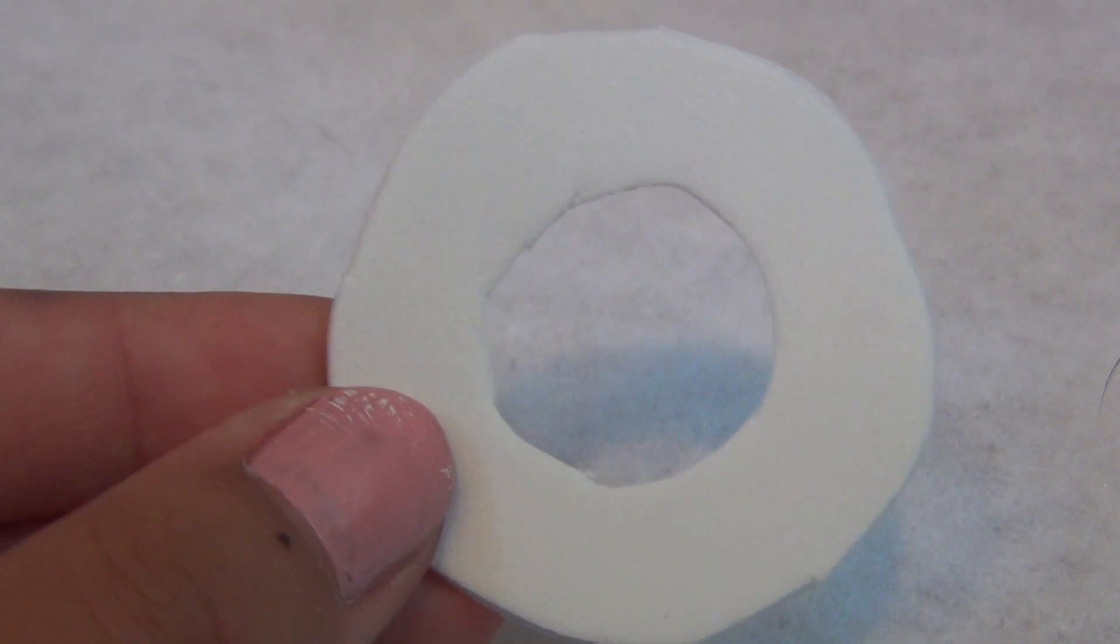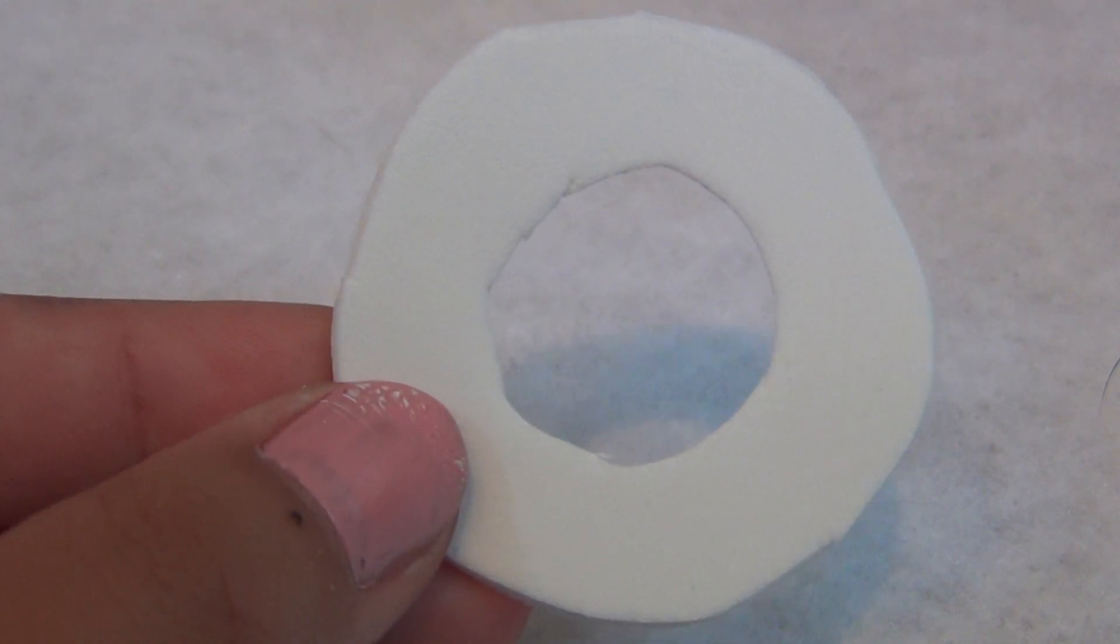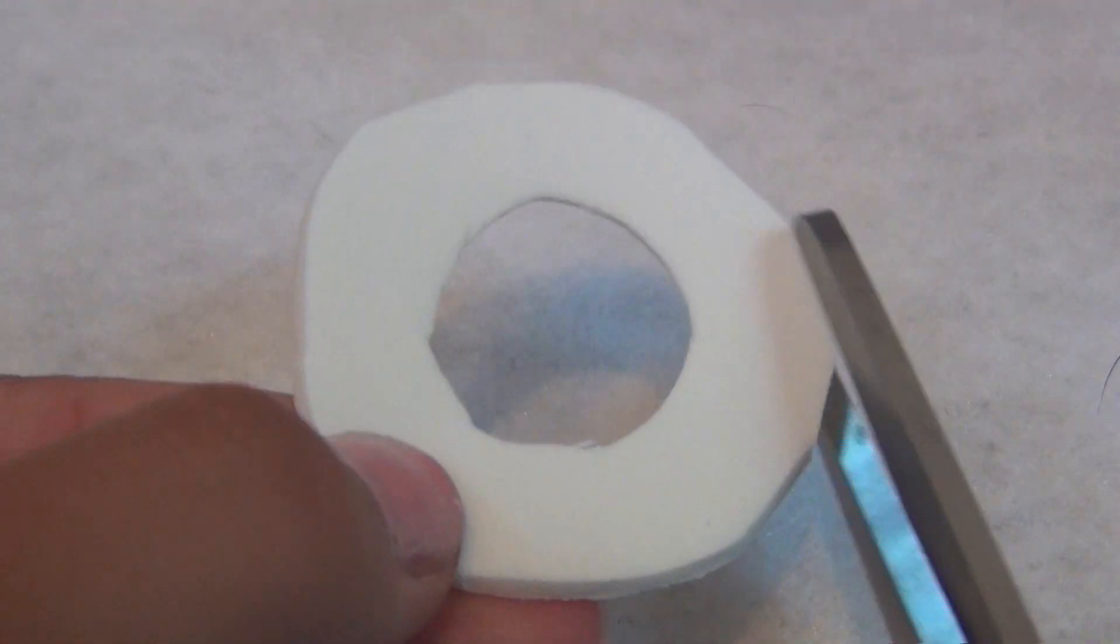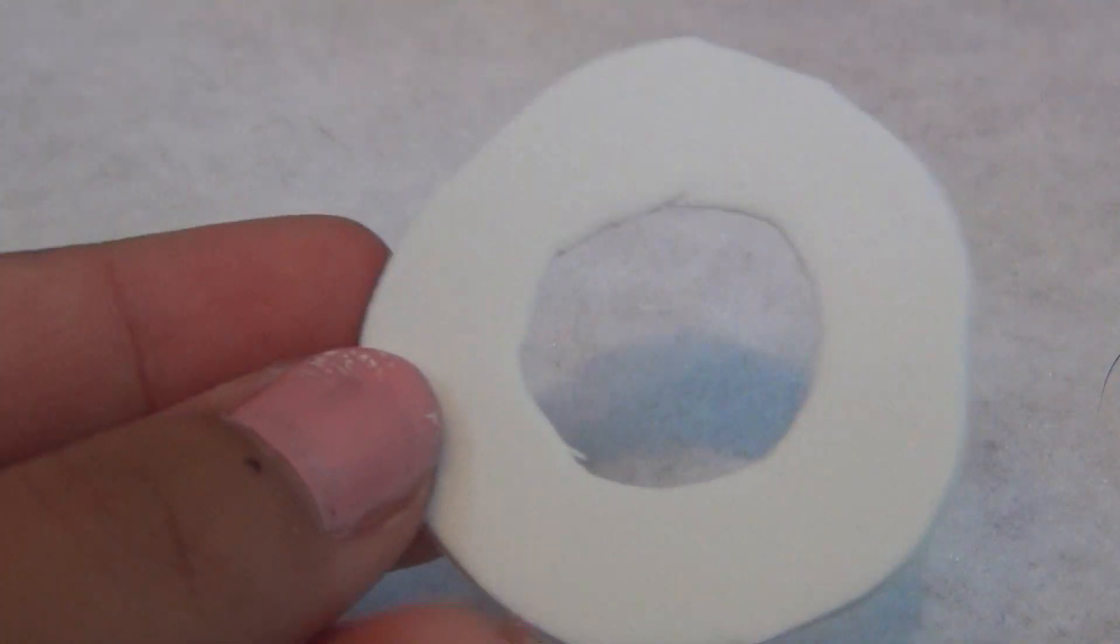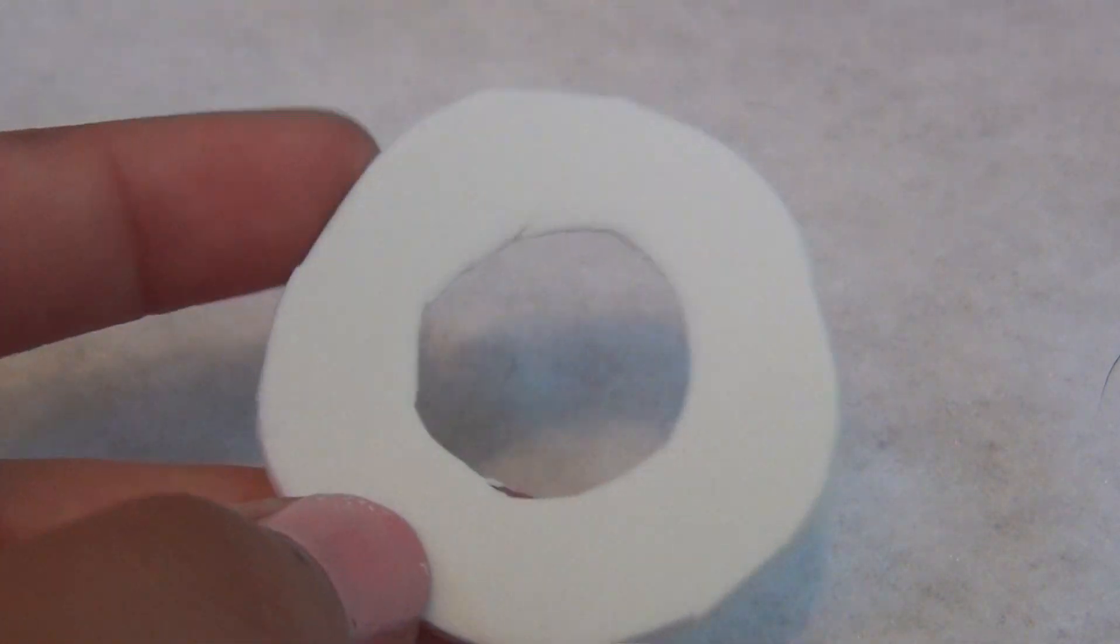While waiting for your hot glue gun to heat up, you could use your scissors to trim the edges to make the toilet seat more realistic.